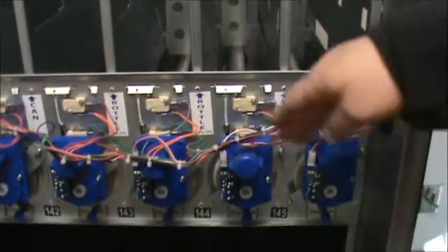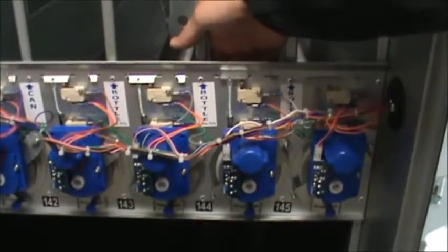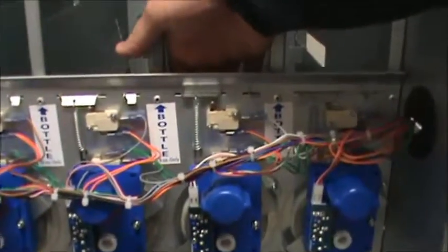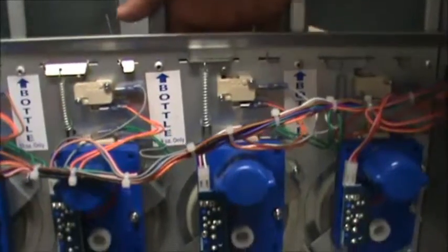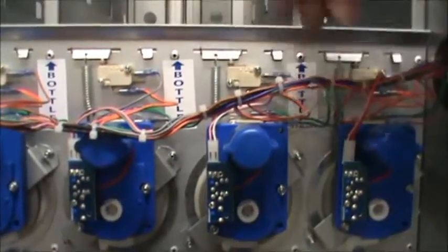When your product is loaded properly it will be at the front of the lane pushing the sold-out switch down so that the machine knows there's product in this lane. You can see that the flap runs the sold-out switch here.